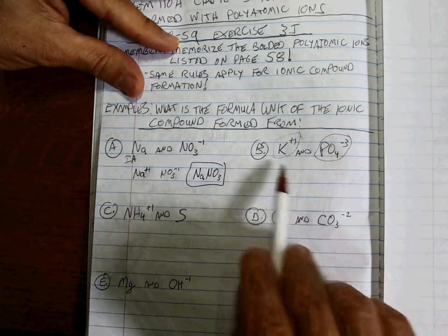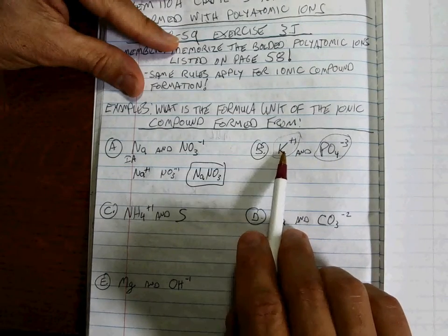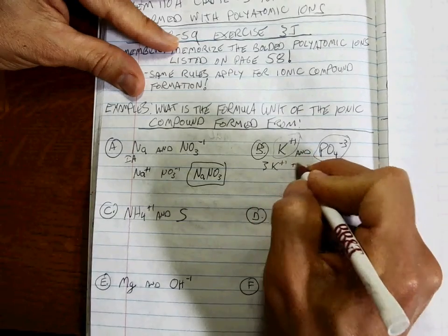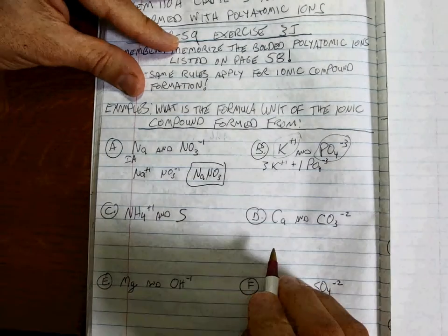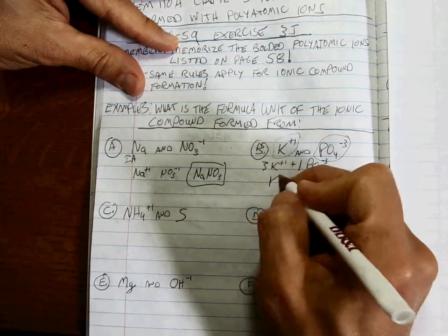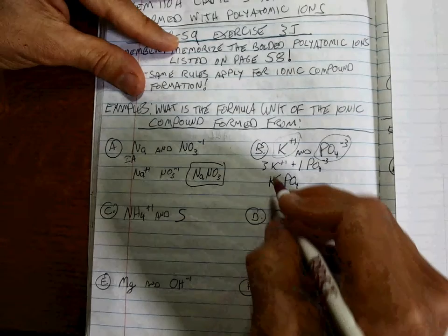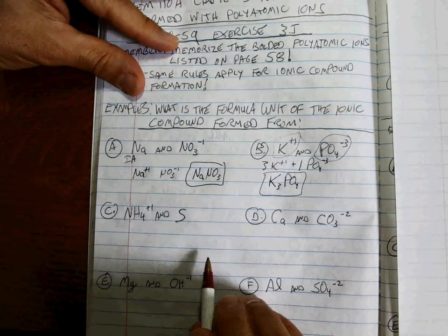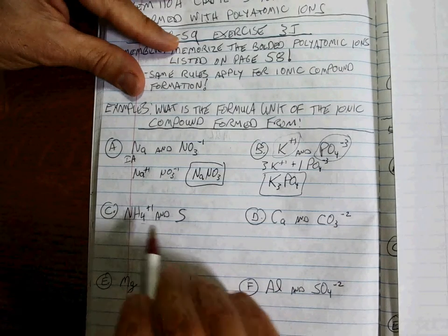The total charge has to be zero. If we have one phosphate that is -3, we need three potassiums that are +1. So how do we write three K (+1) with one PO4 (-3) as a formula? There's really only one way — a subscript three tells you how many K's, and that tells you how many phosphates. The formula is K3PO4: three K(+1) combined with one PO4(-3).